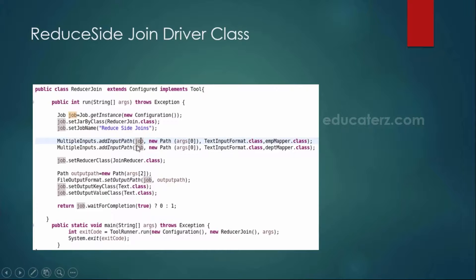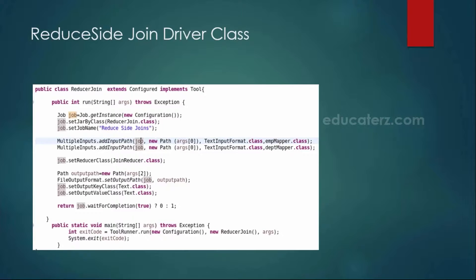Let us assume that I have entered while submitting this job: hadoop jar, jar file name, driver class, then employee.exp and department.exp, and the output directory. That means the first file employee.exp is going to be handled by the employee mapper, and the second one dpt.exp is going to be handled by the department mapper, because the content of the two files are different. So I cannot use a single mapper to process my input files. That is the reason why, with the help of multiple inputs dot addInputPath, we are going to handle multiple inputs for multiple mapper classes.